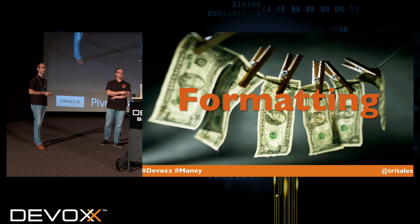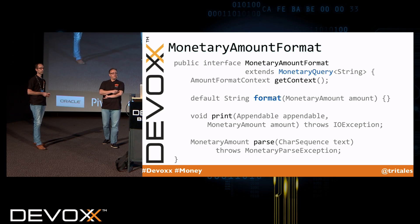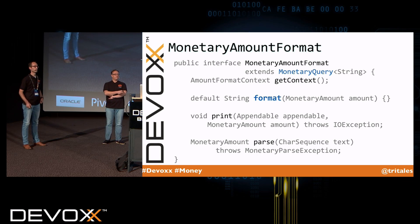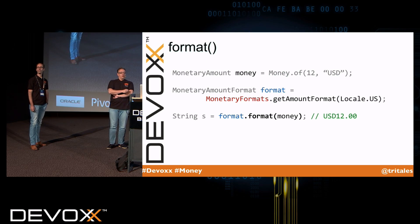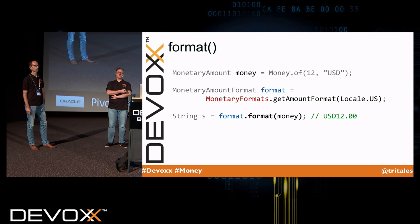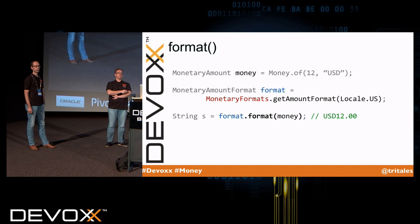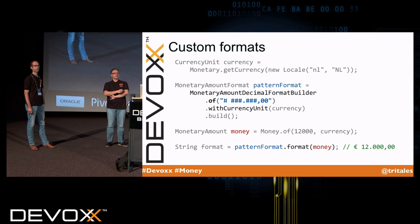One of the goals of the JSR was to make formatting easy, flexible, and to avoid pitfalls we're used to in the JDK when dealing with text formatting — namely thread safety. To deal with formatting there's the MonetaryAmountFormat interface. If we have a MonetaryAmount object, say 12 US dollars, we can get a formatter from the MonetaryFormats class passing in the locale, and we can format it. If you want more control over the output, there are several query builders you can use, or if you want total control you can define custom formats, as shown using the MonetaryAmountDecimalFormatBuilder.